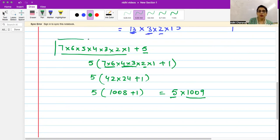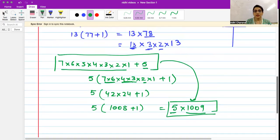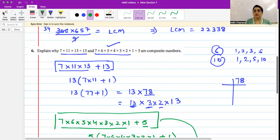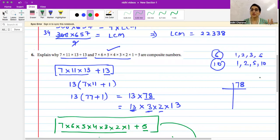Now 5 is a prime number and 1009 is also a prime number. So that means this number is a composite number because we can write the composite number as the product of prime numbers.